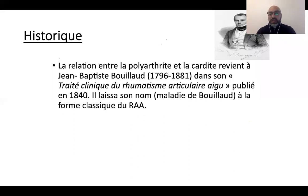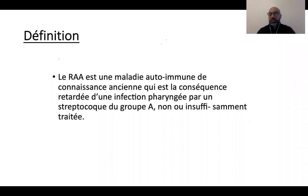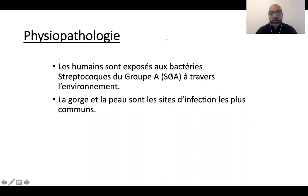Si on définit le rhumatisme articulaire aigu, c'est une maladie auto-immune de connaissance ancienne, qui est la conséquence retardée d'une infection pharyngée par un streptocoque bêta-hémolytique du groupe A, non ou insuffisamment traitée. C'est donc une réaction immunologique du cœur à la suite d'une angine par le streptocoque bêta-hémolytique du groupe A.